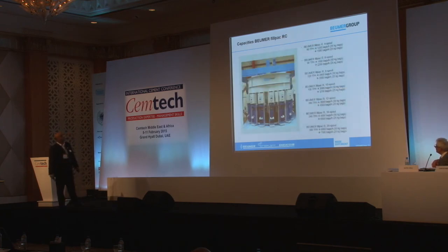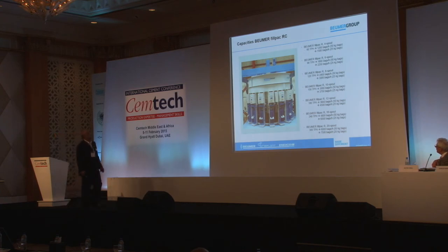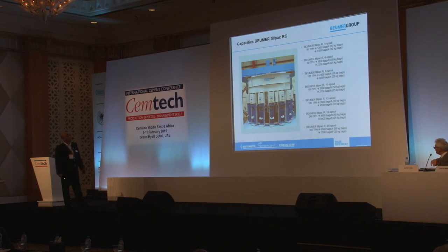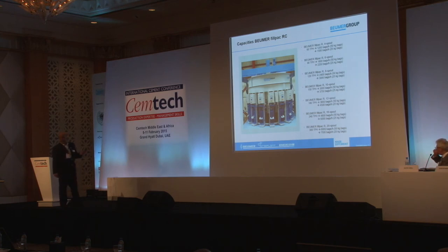This is the typical packer. It's called the Fill Pack R or C. The Fill Pack R is the rotary version. We can start with a four-spout packer and go up to 20-spout rotary machines, showing the capacities for each spout count — 8, 10, or 12 spouts — depending on the client's needs and requirements.